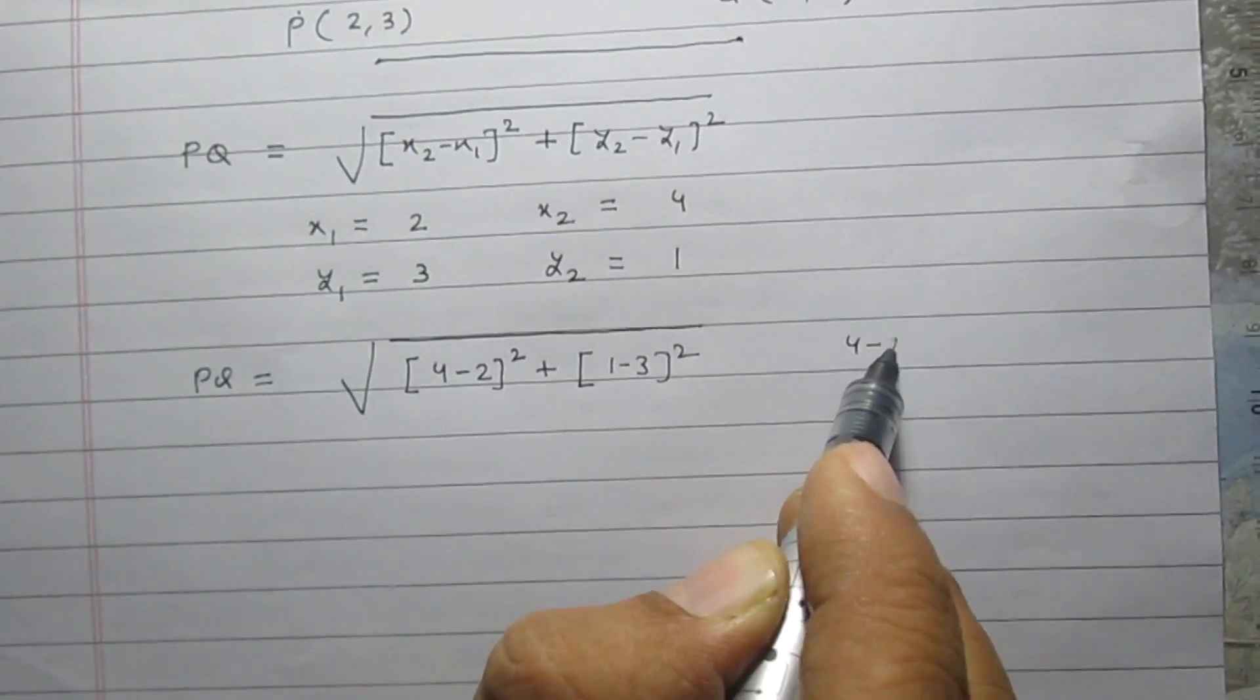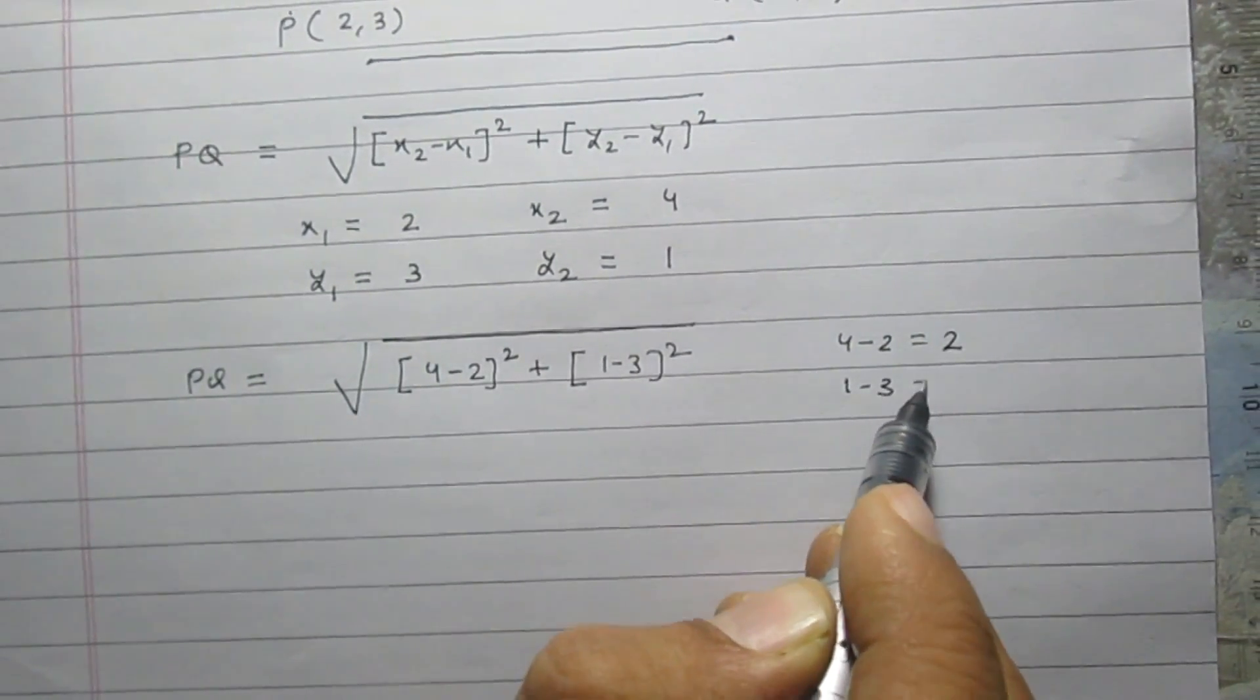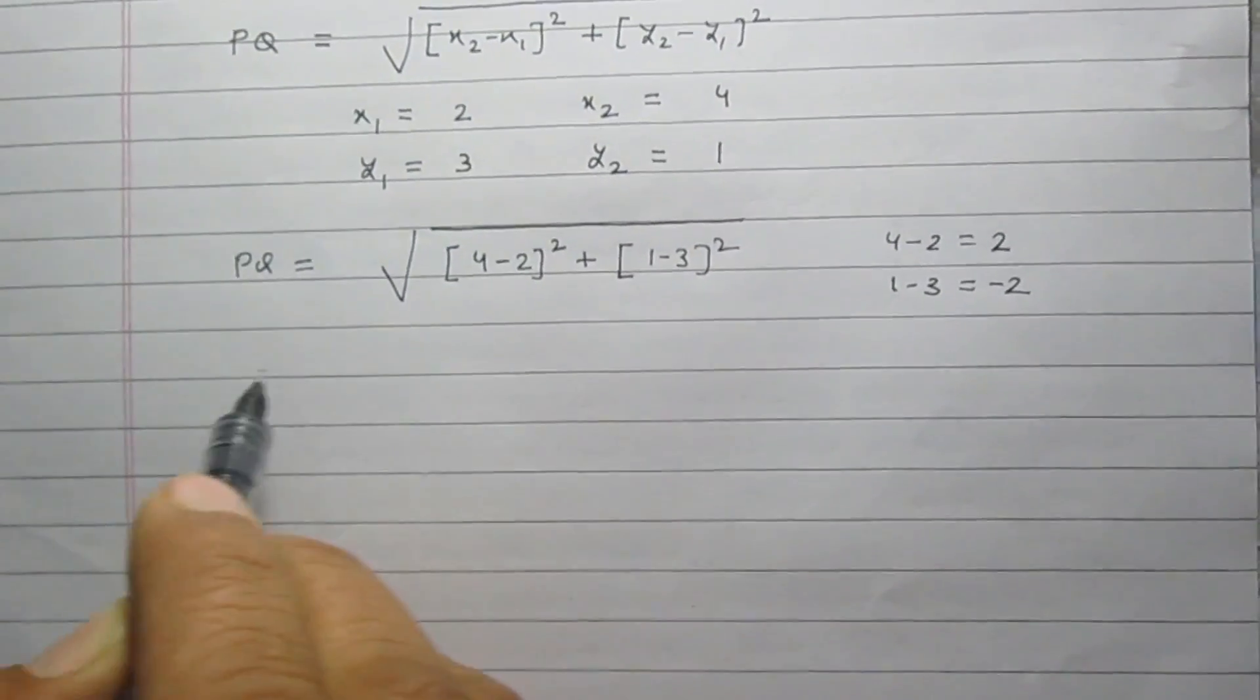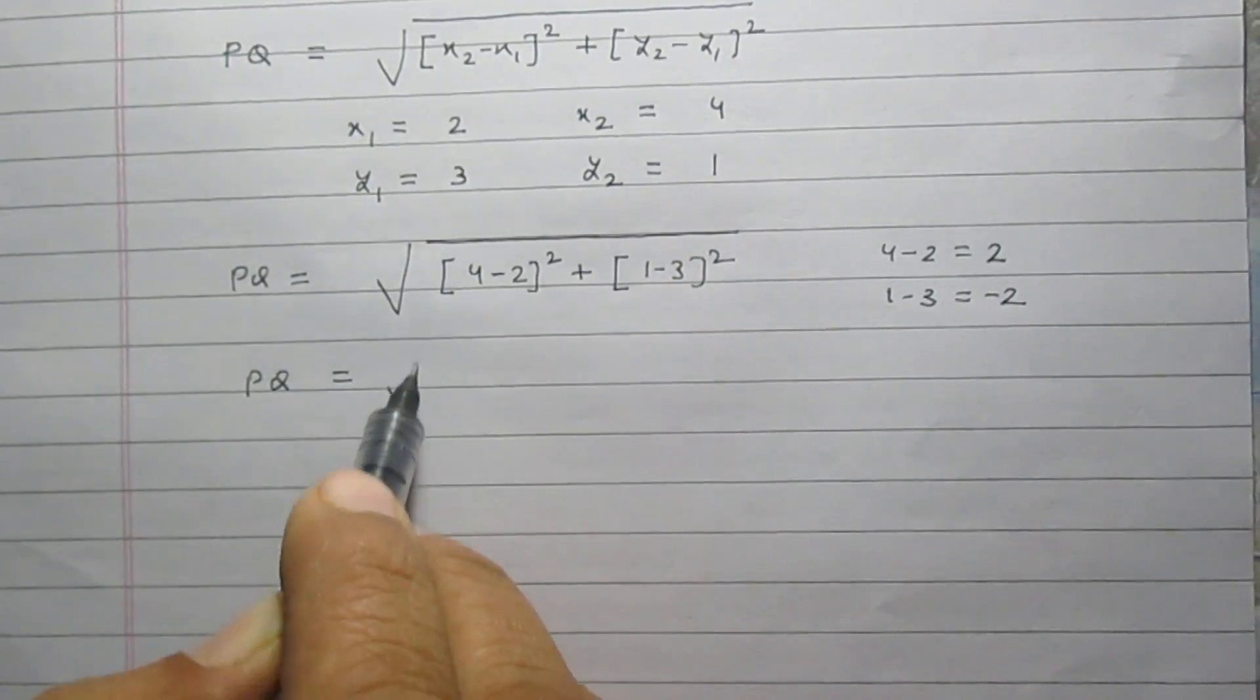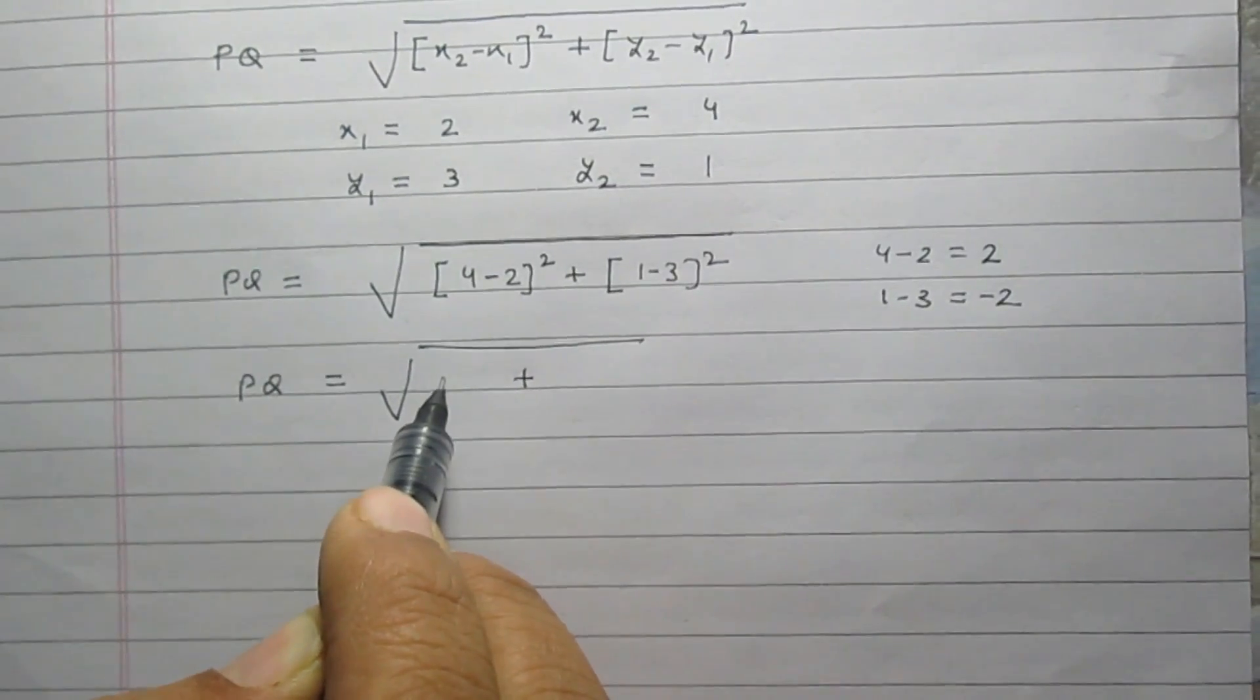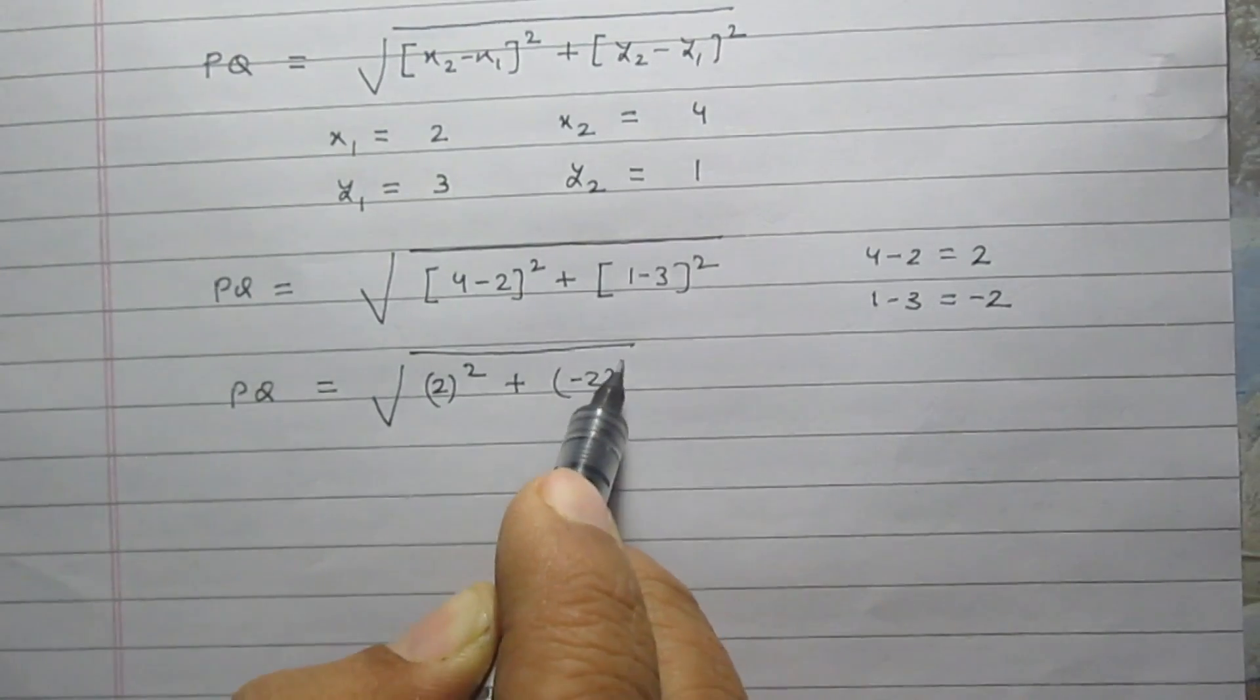We know that 4 minus 2 equals 2 and 1 minus 3 equals minus 2. So on simplifying, we will get PQ equals square root of (2)² plus (-2)².